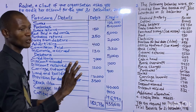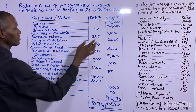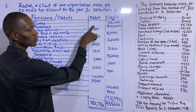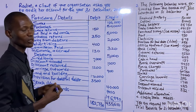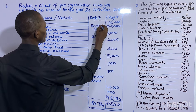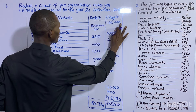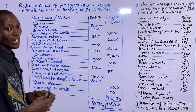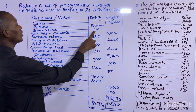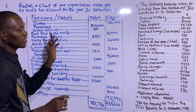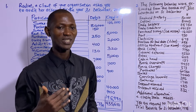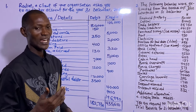Sales is an income account and all income accounts are credited — this is intact. Purchases is an expense and all expenses are debited, but it's been credited here, so we have to debit it — the bookkeeper committed an error by crediting purchases. Sales returns is a returns outward account, which is an expense and all expenses are debited — this is intact.